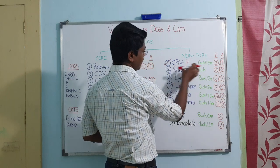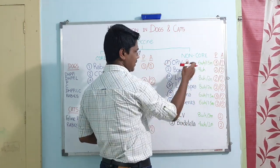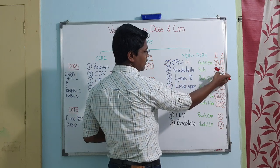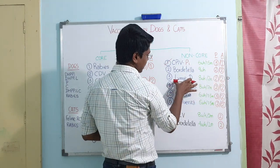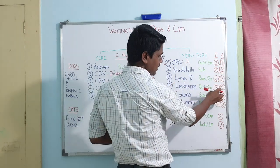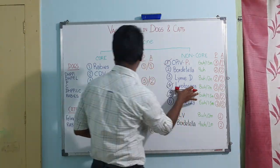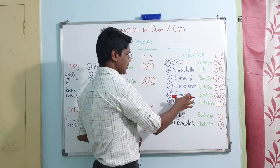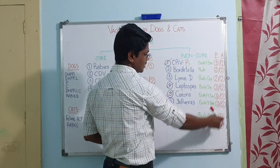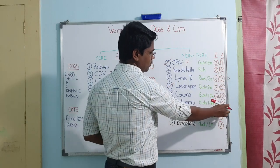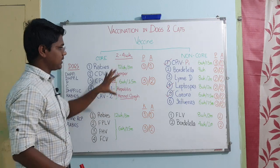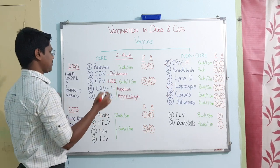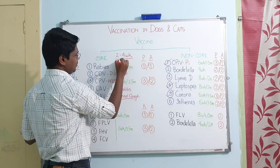For non-core vaccines: parainfluenza requires three doses in puppies and a single dose in adults, but since it comes as a combined vaccine, adults may also receive two doses. Bordetella requires two doses whether puppy or adult — one primary and one booster. Lyme disease and Leptospira are the same: two doses in puppies and two doses in adults, though as a combination multivalent vaccine, puppies may receive three doses. Corona requires three doses in puppies and two doses in adults. Influenza requires two doses in both puppies and adults. The interval between doses is two to four weeks, or 15 to 30 days.